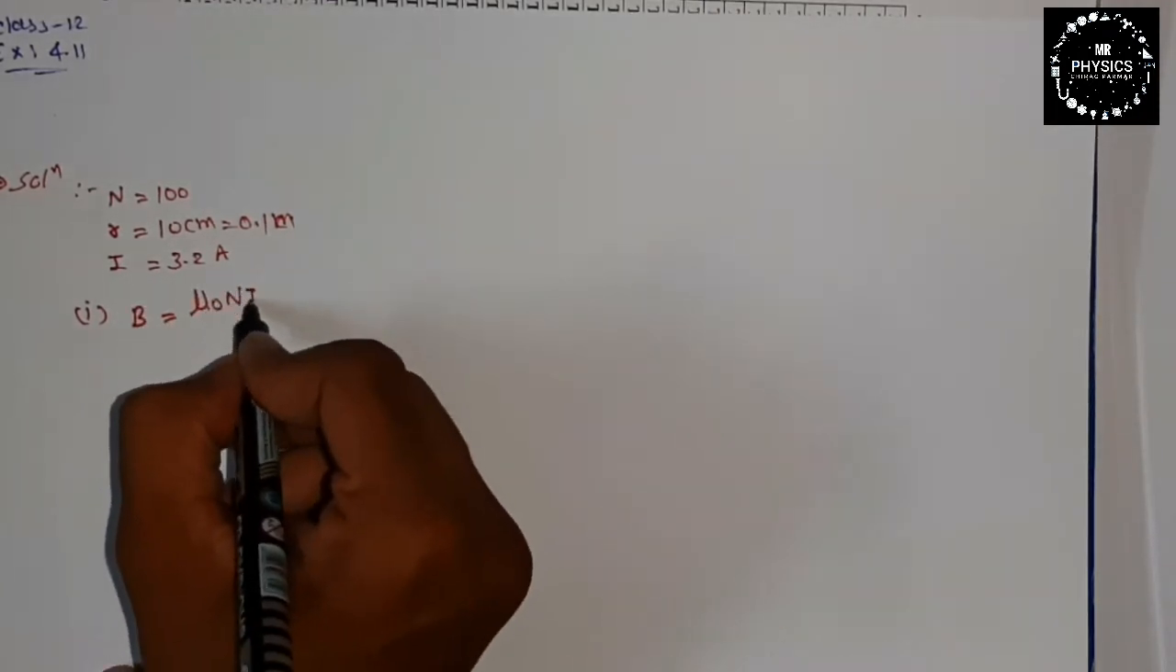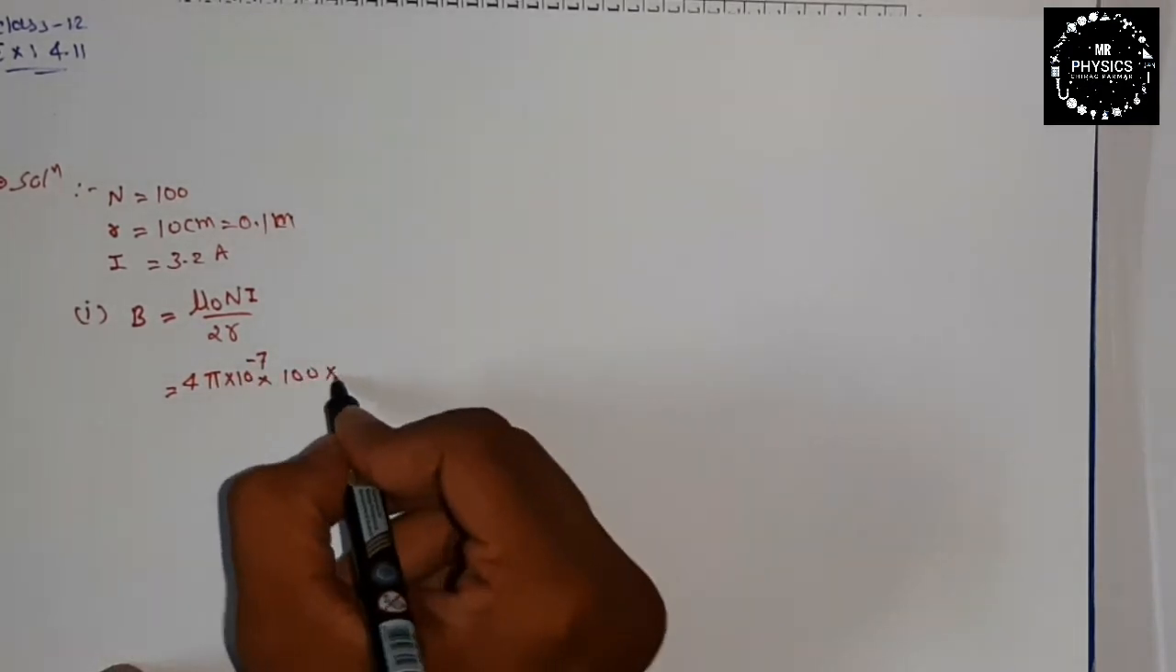Now first thing, we have to define field at the center. The formula will be B is equal to mu_0 N I by 2r. Mu_0 value is 4 pi into 10 raise to minus 7, N is 100 turns, where I is equal to 3.2, and r is 0.1 which means 10 raise to minus 1. So you can plug this and calculate.